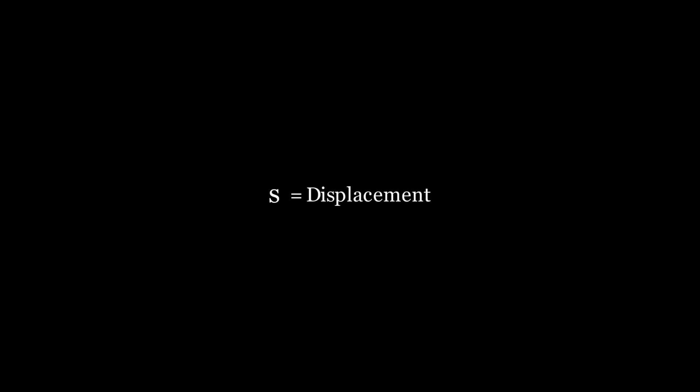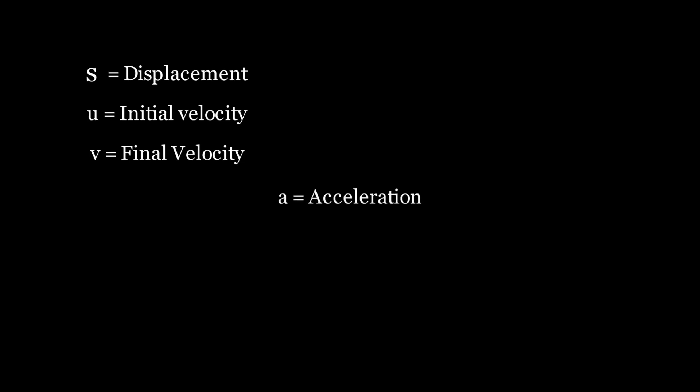S represents the displacement of an object. U represents the initial velocity of an object. V represents the final velocity of an object. A represents the acceleration of an object. And T represents the time taken for the entire motion.